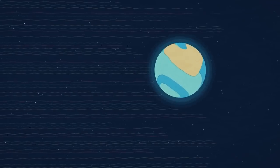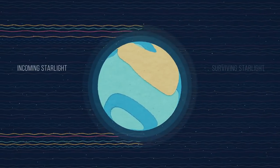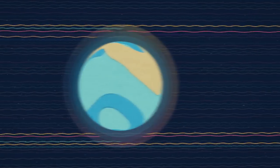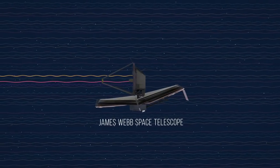During a transit, some of the star's light travels through the planet's atmosphere and gets absorbed. The light that survives carries information about the planet across light-years of space where it reaches our telescopes.